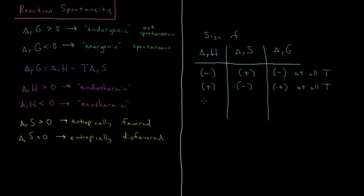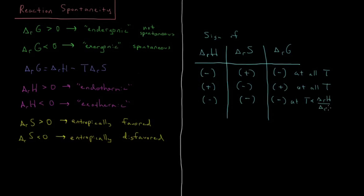Then we have the mixed cases. If you have an exothermic reaction — which is favorable — but an entropically disfavored reaction where entropy decreases, it's only at certain temperatures where the enthalpy is large enough to compensate for the entropy. So delta G of reaction is only going to be negative at temperatures less than the ratio of delta H to delta S.